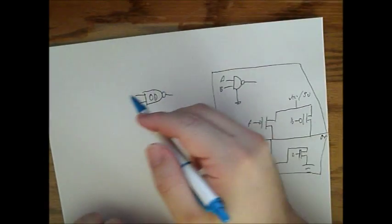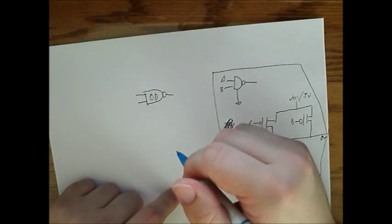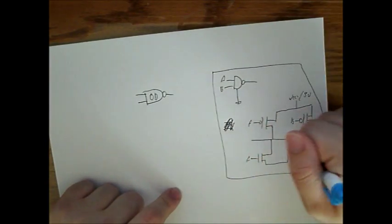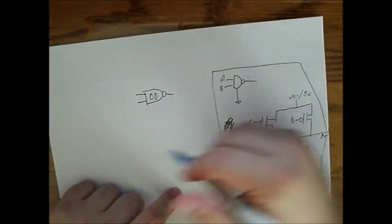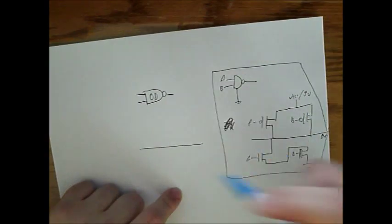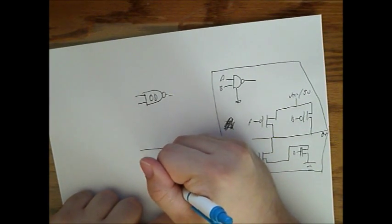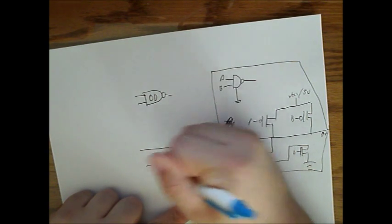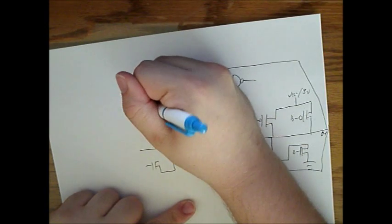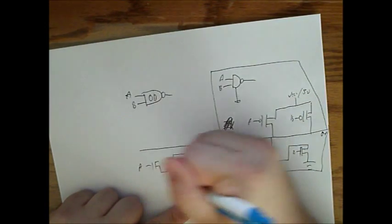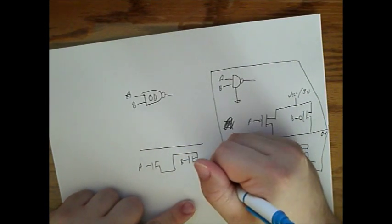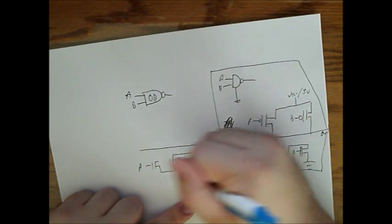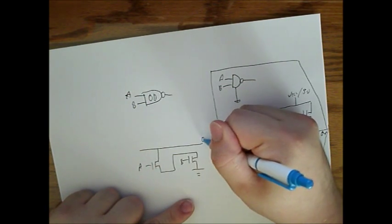As opposed to an Open Drain, where it will only contain the N channels and no P channels. This is A, B once again. This will come up to the output line.